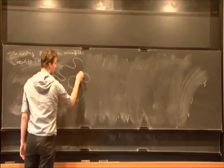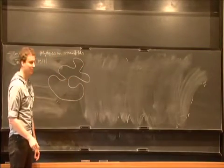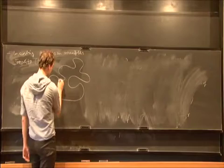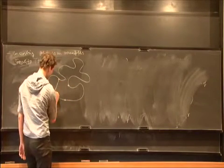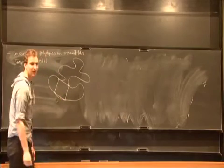which is just a continuous embedding of a circle in the plane. Can you always find four points on this curve that form a square like this? And it's still open.